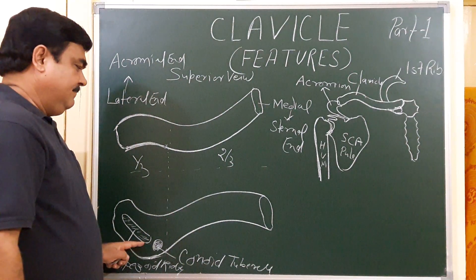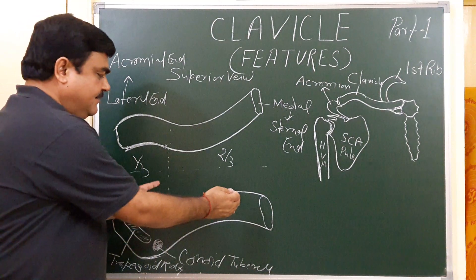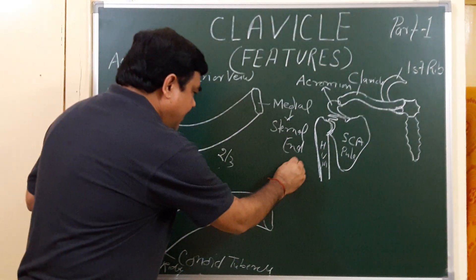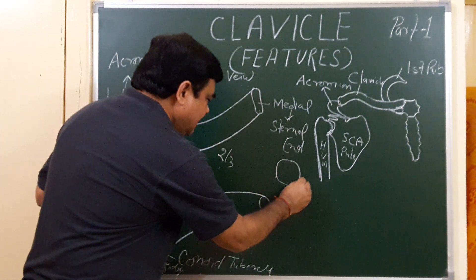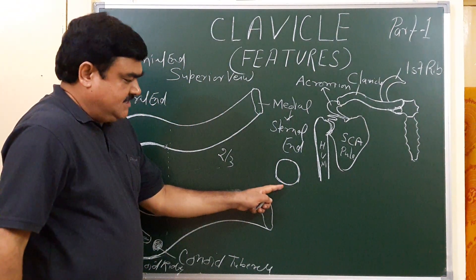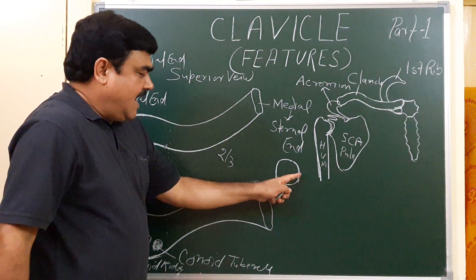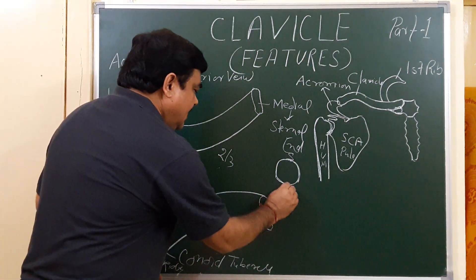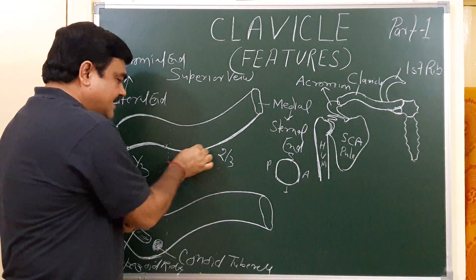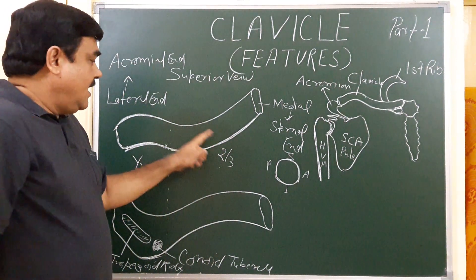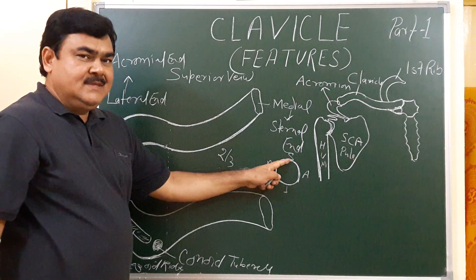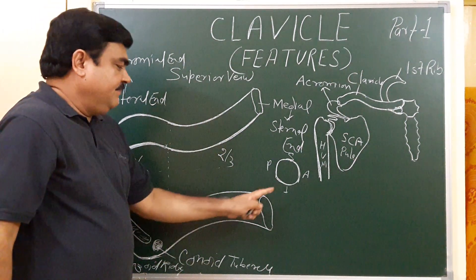Now for the medial two-thirds part: if you cut a cross-section, you will find it has four surfaces — superior surface, inferior surface, anterior surface, and posterior surface. The anterior surface is anteriorly convex, and the posterior surface is posteriorly concave.